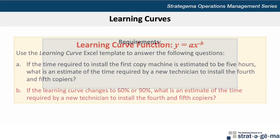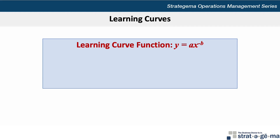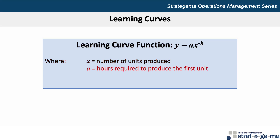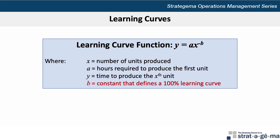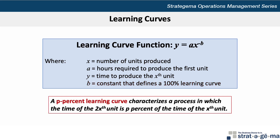The learning curve function equation is y equals ax to the exponent of negative b, where x equals the number of units produced, a equals the number of hours required to produce the first unit, y equals the time to produce the xth unit, and b is the constant that defines a 100% learning curve. A p% learning curve characterizes a process in which the time of the 2xth unit is p% of the time of the xth unit.